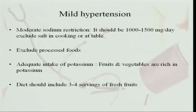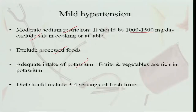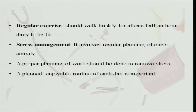For mild hypertension, a moderate sodium restriction of 1000 to 1500 milligrams per day is required. Salt should be excluded in cooking, no table salt, no extra salt added to food, and all processed foods should be excluded because their salt content is very high. Adequate intake of potassium is necessary, so you should increase intake of fruits and vegetables, with 3 to 4 servings of fresh fruits. Regular exercise is also very important — a brisk walk of at least half an hour, five days a week, totaling at least two and a half hours per week.